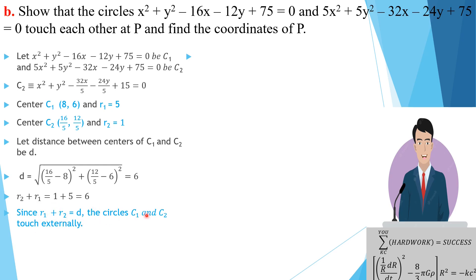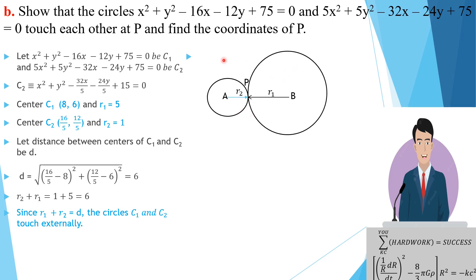Now we find the coordinates of point P where they touch. Some students would try to equate the two circle equations to get a line of intersection, then intersect that line with the line joining the centers A and B. However, that approach is long and tedious. Instead, since the radii are r1 = 5 and r2 = 1, point P divides the line segment AB in the ratio 1:5.